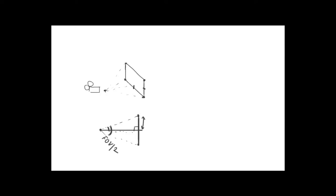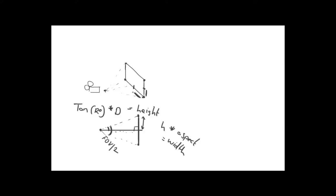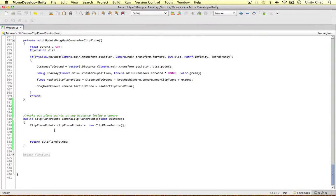We already know the distance, and if we take the field of view divided by 2 we get the angle of the right-angle triangle. To get the ratio of this distance and the angle we use the Mathf.Tan function: we pass in that angle in radians, then multiply the result by the distance, and that gives us the height. Then we just multiply the height by the aspect ratio of the camera to get the width. With those two calculations we have the half-height and half-width of this clip plane.